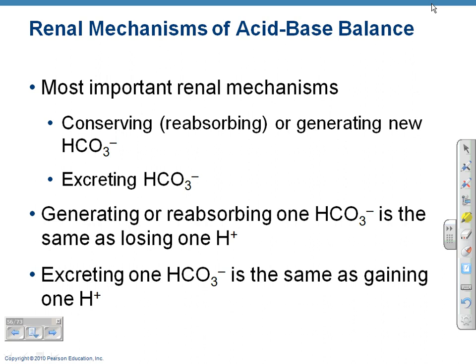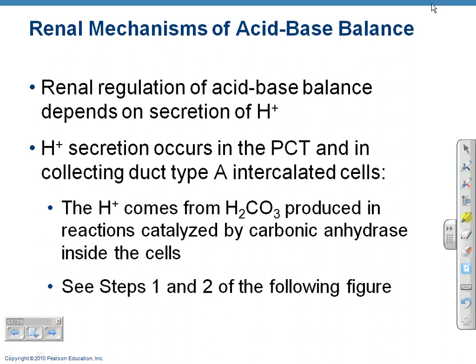The most important renal mechanisms are conserving bicarbonate and excreting bicarbonate as needed. Generating or reabsorbing one bicarbonate ion is the same as losing a hydrogen ion, which greatly affects pH. Renal regulation of acid-base balance depends totally on the secretion of hydrogen ions. Too many hydrogen ions makes us acidic; not enough makes us basic. Whether the renal system is secreting or excreting hydrogen ions has a very important effect on pH.